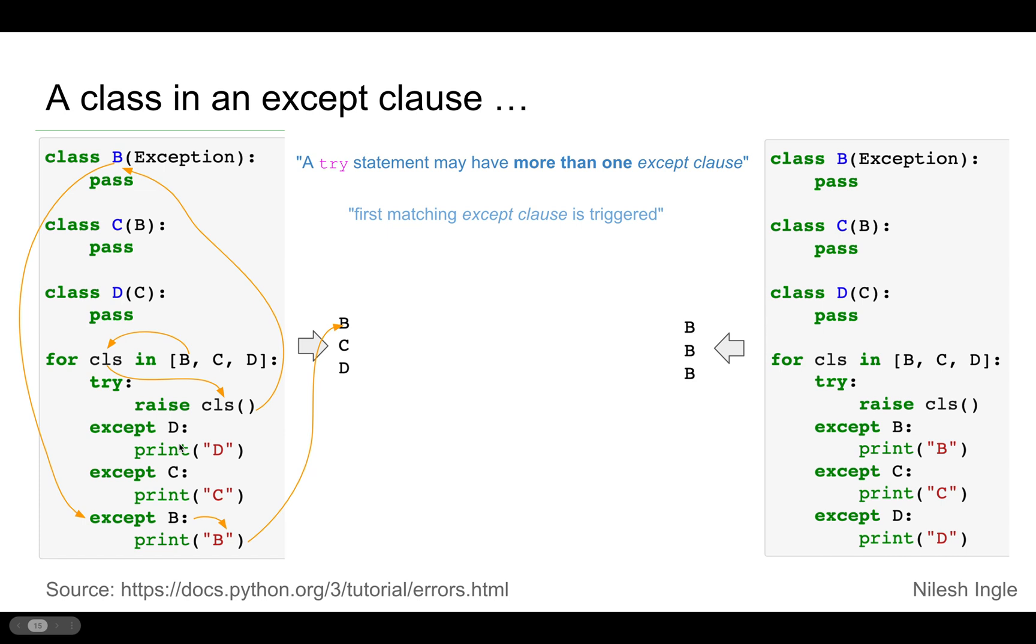And so what happens in this case is when we, in the first iteration, when we raise B, the name would match with the except clause B, which is the first one, and we'll get B in the output.